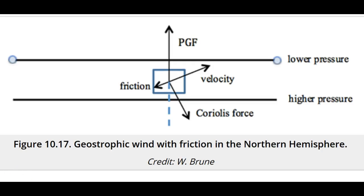When the flow is in the upper part of the atmospheric boundary layer, which is a kilometer or two above the surface, the turbulence in the boundary layer acts to impede the horizontal wind. This resistance to flow is not really friction, but it does act to slow the wind down no matter the wind's direction. As a result, we can assume that this turbulent drag is a force that opposes the wind velocity.